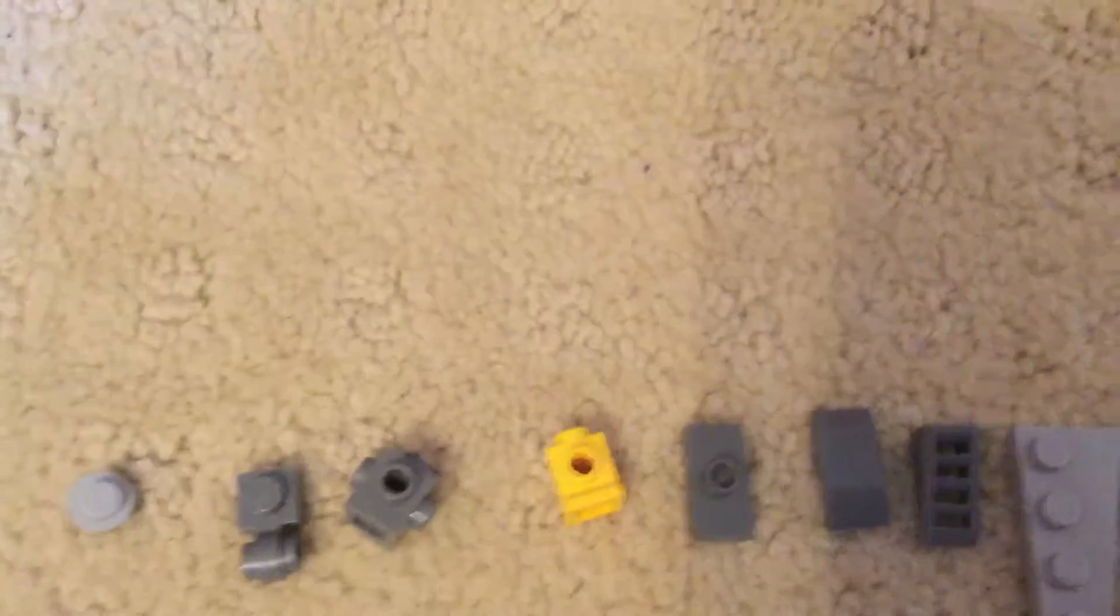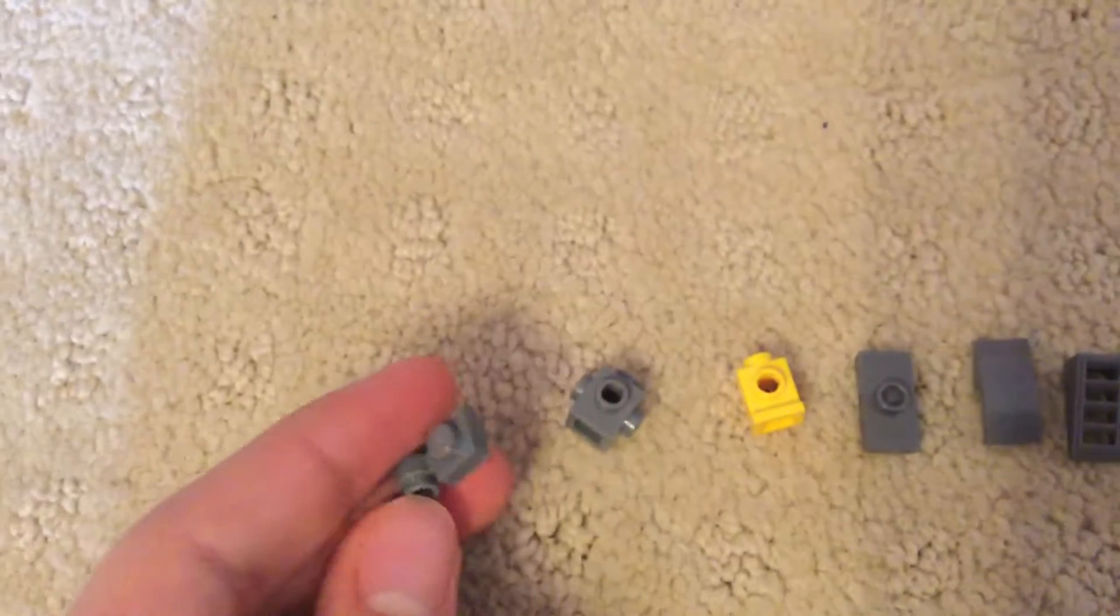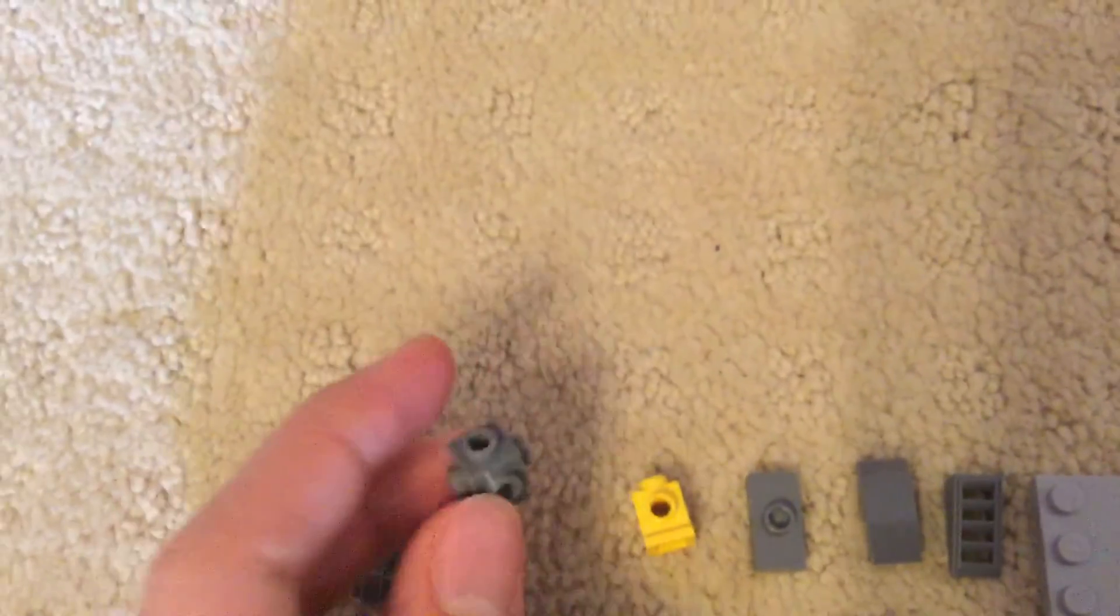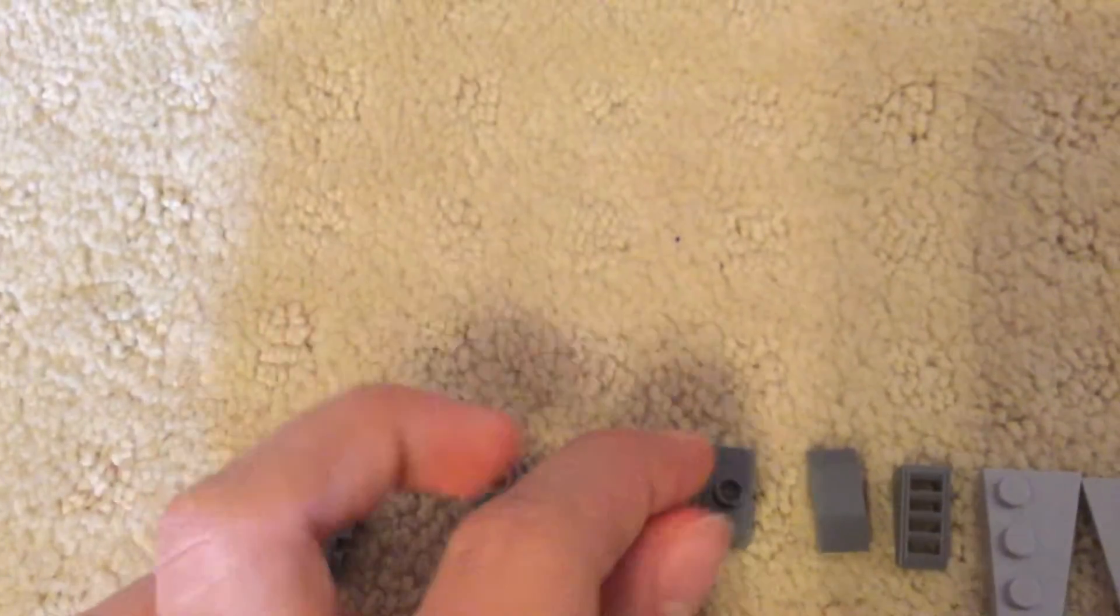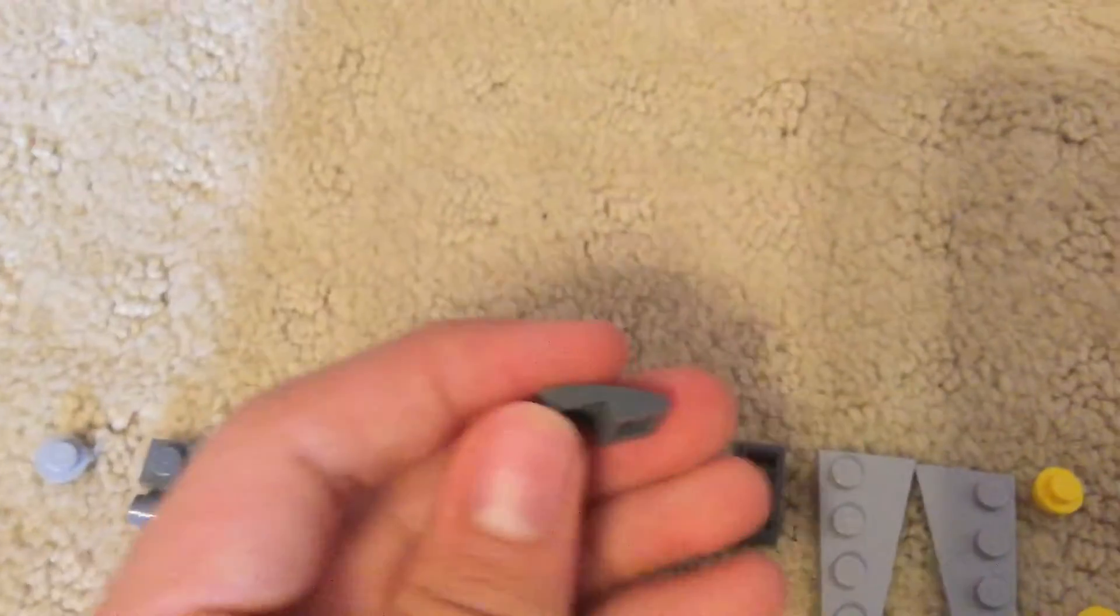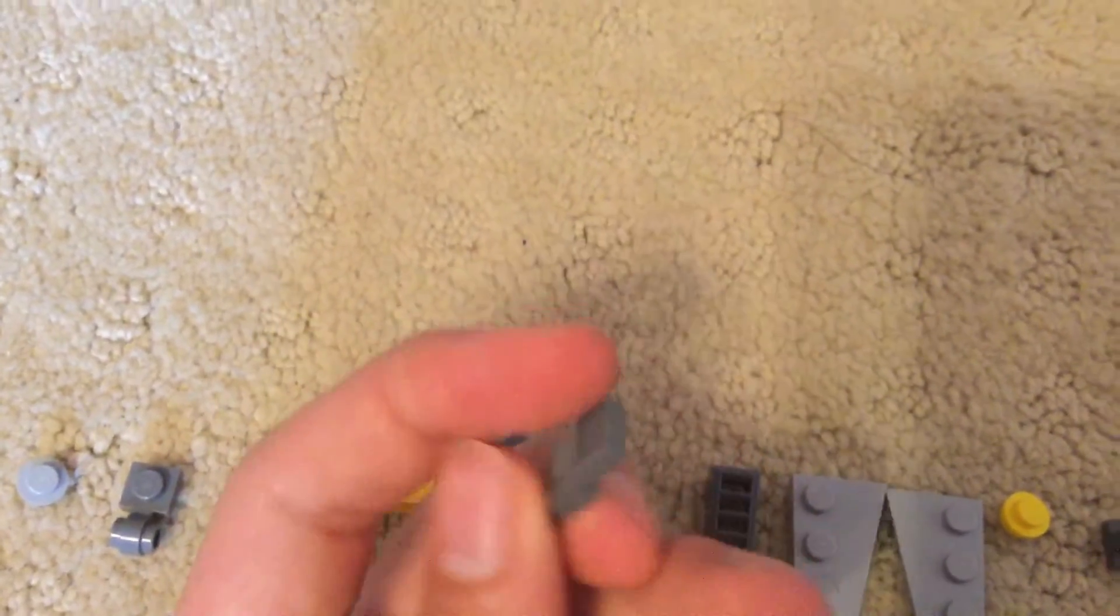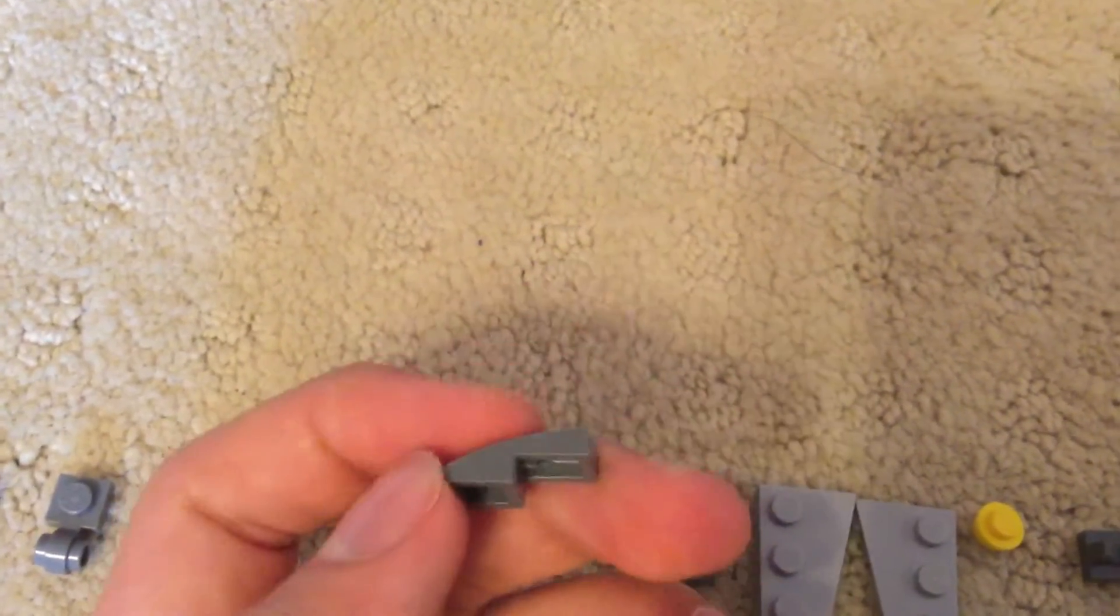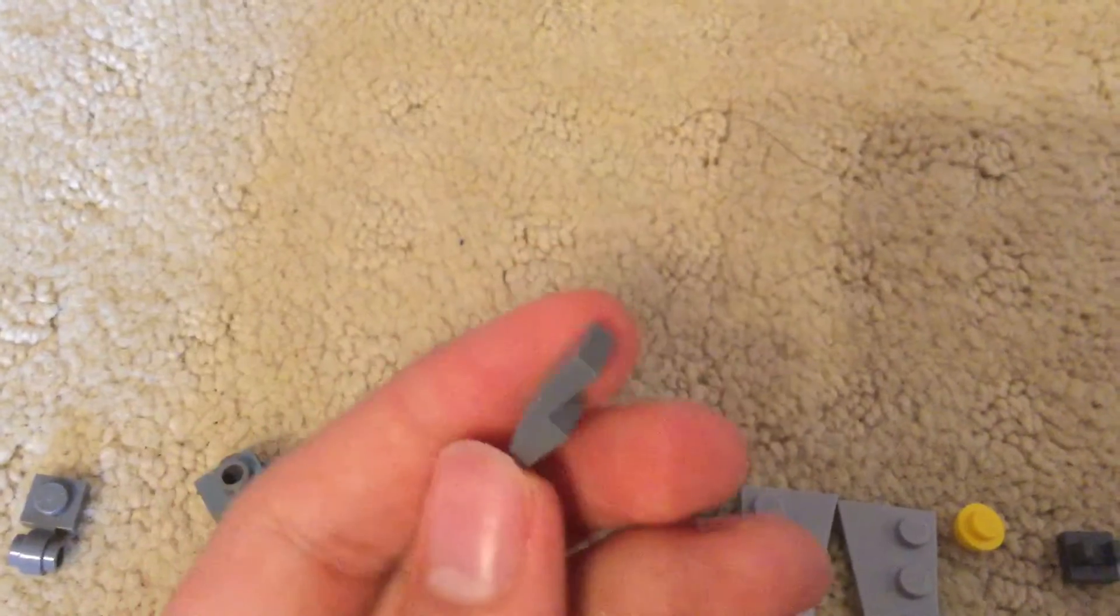What you're gonna need is one light gray 1x1, one 1x1 with a little side mirror attachment, one Travis brick, a yellow headlight brick, one dark gray jumper plate, one 1x2 dark gray slope thing, this piece.